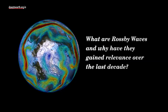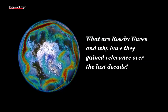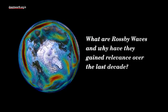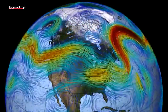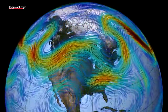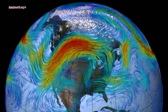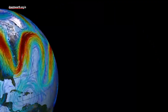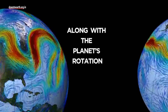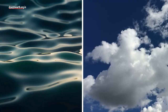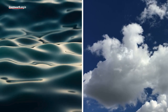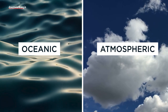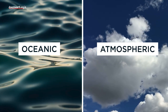But what are Rossby waves and why have they gained relevance over the last decade? Rossby, or planetary waves, occur within the Earth's ocean and atmosphere. They move continuously along with the rotation of the planet. These can be classified into two categories: oceanic and atmospheric Rossby waves.